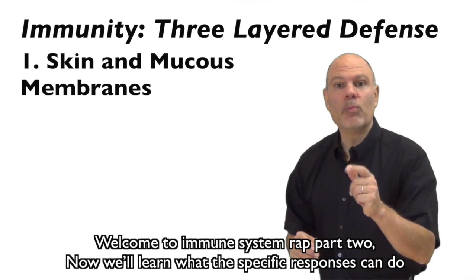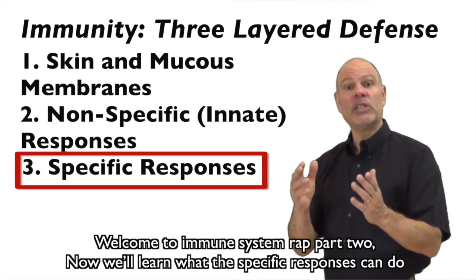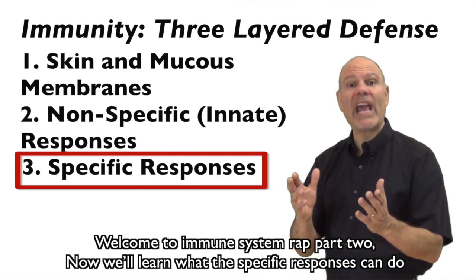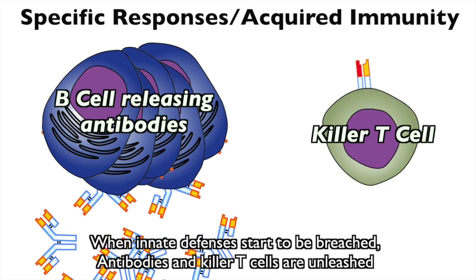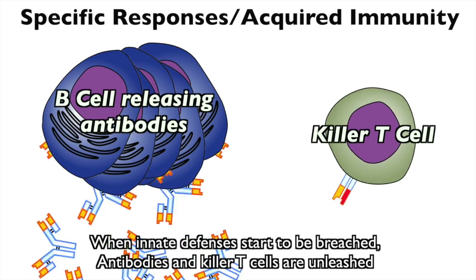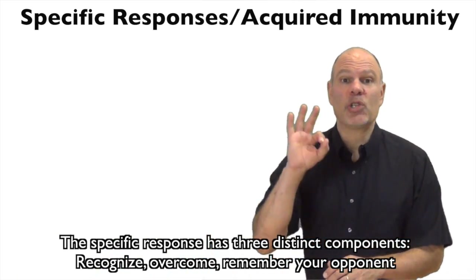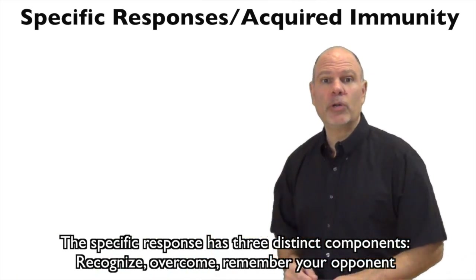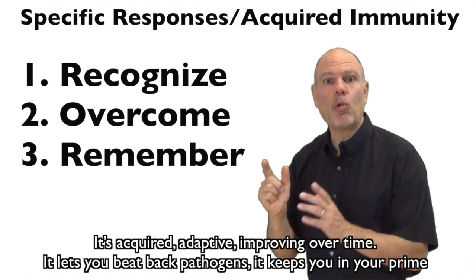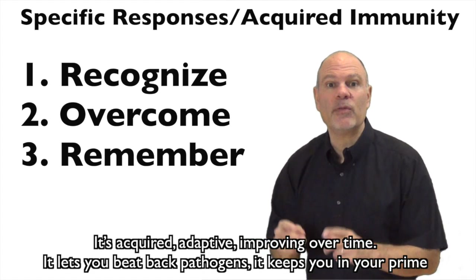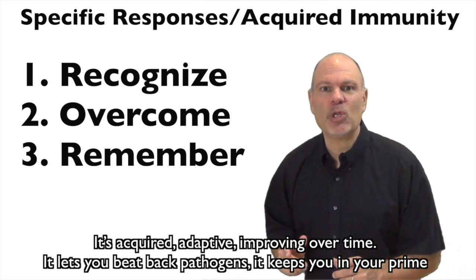Welcome to Immune System Wrap Part 2. Now we'll learn what the specific responses can do. When innate defenses start to be breached, antibodies and killer T-cells are unleashed. The specific response has three distinct components: recognize, overcome, remember your opponent. It's acquired, adapted, and proven over time. It lets you beat back pathogens, it keeps you in your prime.